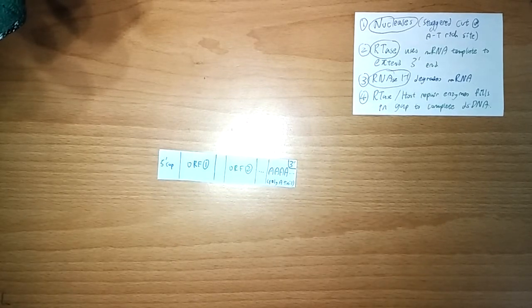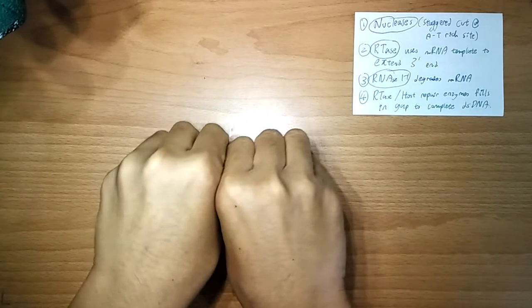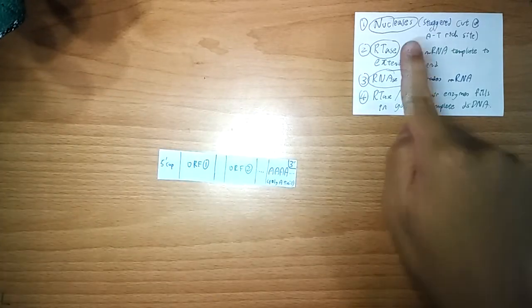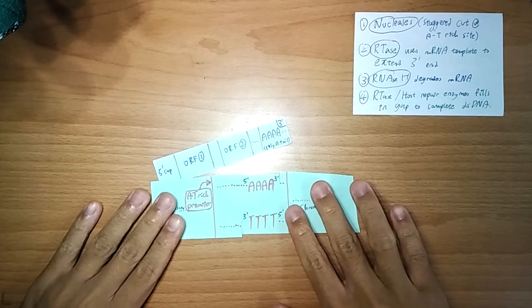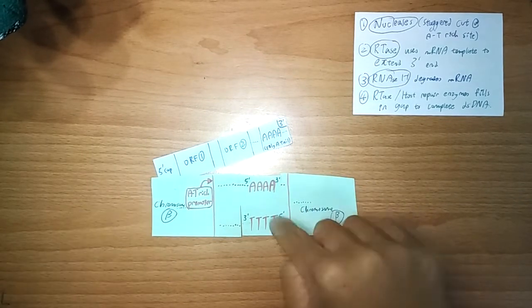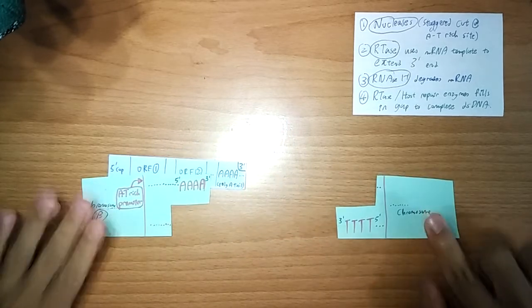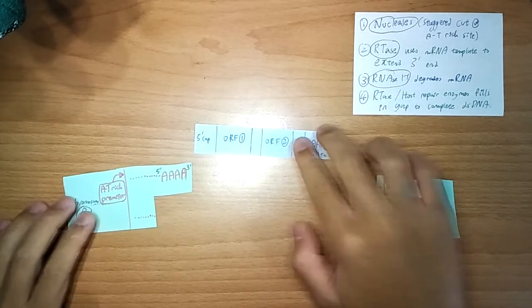What will happen is the RNA binding proteins from here will bind onto it. They will carry it in the nucleus. And in the nucleus, the nuclease enzymes will look for an AT-rich site, most likely a promoter also. And after it finds it, you'll make a staggered cut. Staggered cut at the AT-rich site.